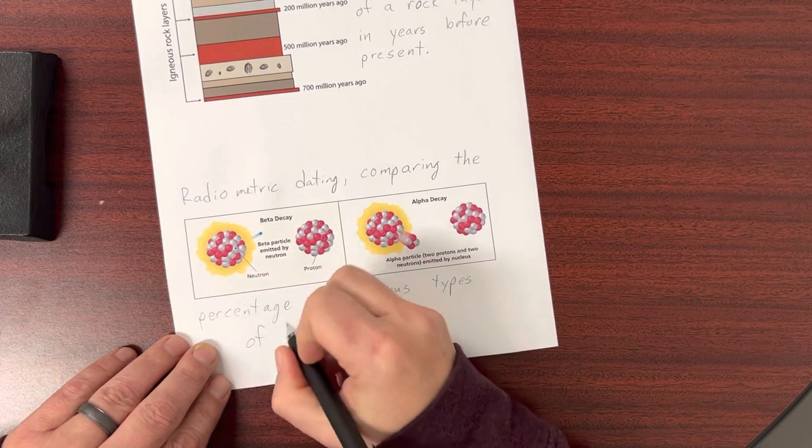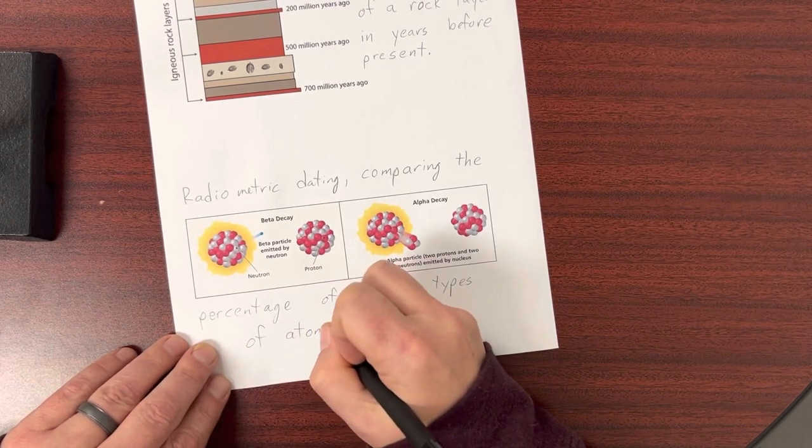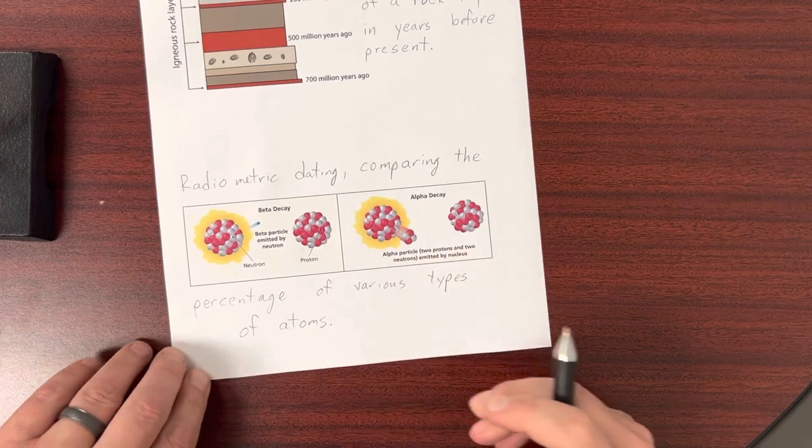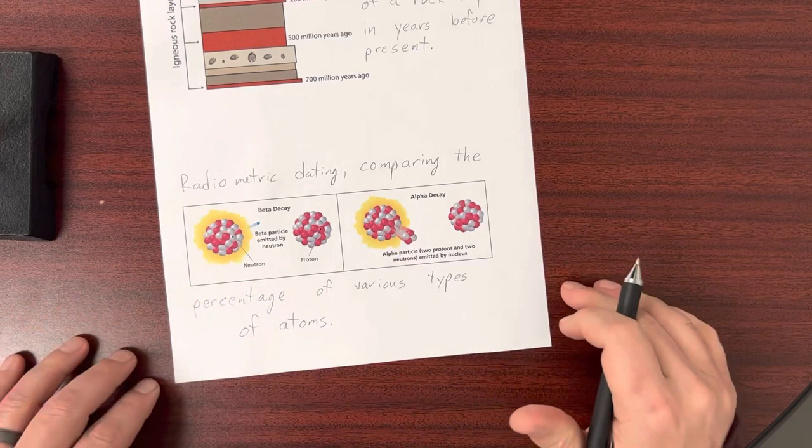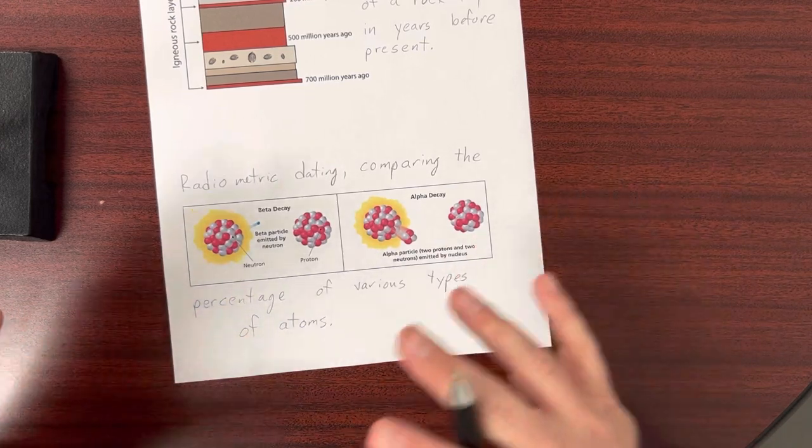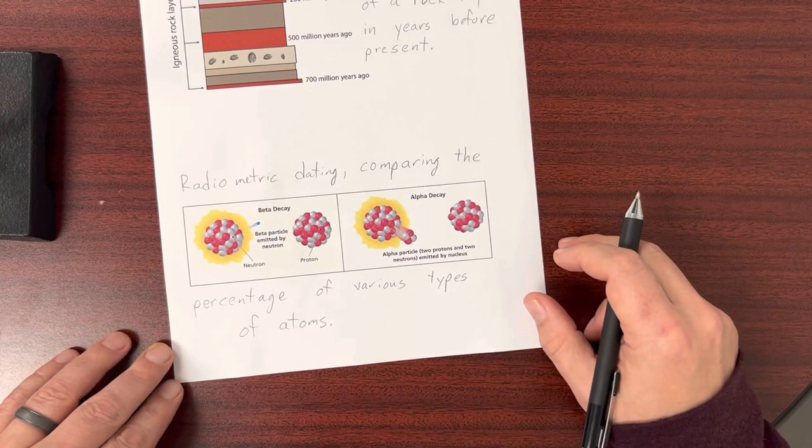So you might have an atom of carbon. Well, that carbon is going to slowly, as it sits in the rock, change over time. And we can look at the different types of carbon in that rock and get an idea, just by looking on a graph, what the age of that rock is.